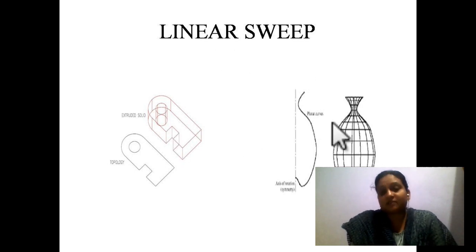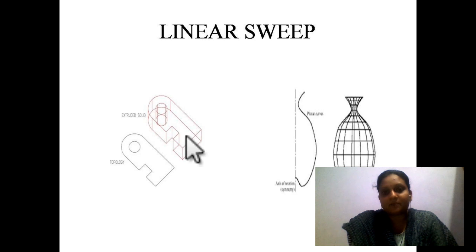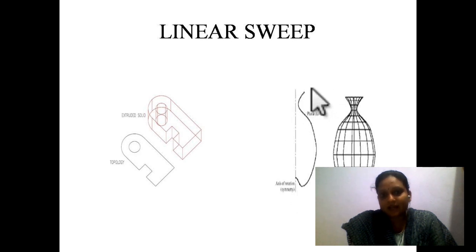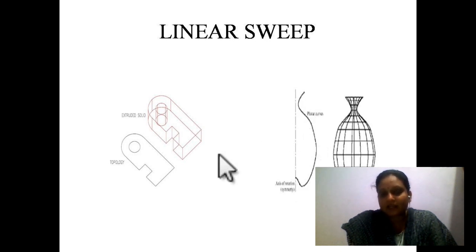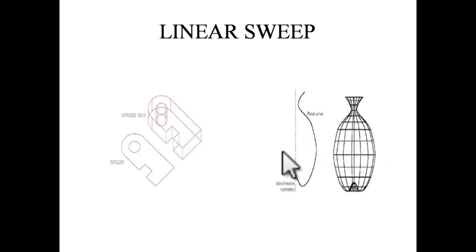Linear sweep has two types. First is translational sweep or extrusion: you create a required 2D figure and extrude it in the required direction to get the solid. Second is rotational sweep: you have an axis and a required 2D sketch, and you rotate the sketch along the required axis to get the 3D model. For example, if you have a required sketch and rotate it around an axis, you will get the 3D model. These two types — translational and rotational — come under linear sweep.